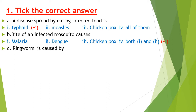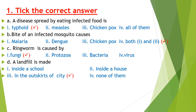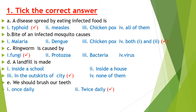Part C — ringworm is caused by fungi. Part D — a landfill is made inside a school, inside a house, in the outskirts of the city, or none of them. The answer is number 3: in the outskirts of the city. Part E — we should brush our teeth. We all know that we should brush our teeth twice a day.